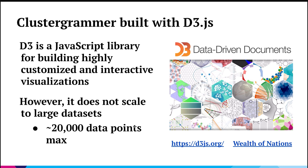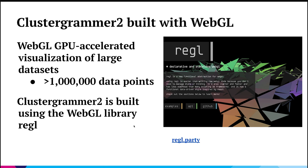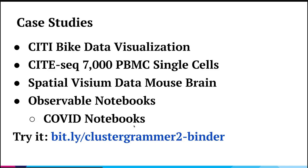The original ClusterGrammar was built using a library called D3 — Data Driven Documents — which is a very powerful data visualization library. But the problem with it is it doesn't scale up to the data sizes we want with newer single-cell datasets; you're capped at maybe around 20,000 data points before it becomes too slow. So for ClusterGrammar 2, we built using WebGL, which uses the computer's graphical processing unit — basically what you use for video games — to speed up data visualization processing. Now we can scale to over a million data points, and we chose the WebGL library called Regl.